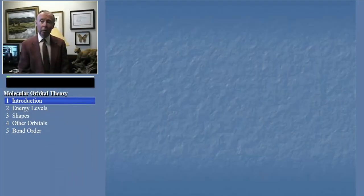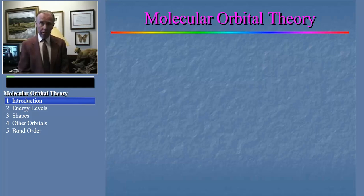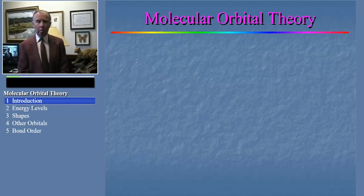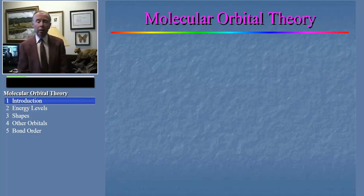Today let's talk about molecular orbital theory. Molecular orbital theory is the most modern and sophisticated model to describe bonding in a molecule. It's not as easy to get your head around as other models of bonding, like valence bond for example, but once you get the hang of it, it really has some amazing and powerful features.